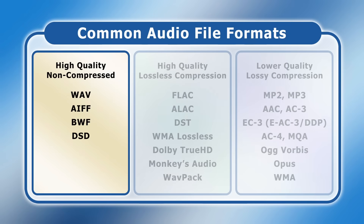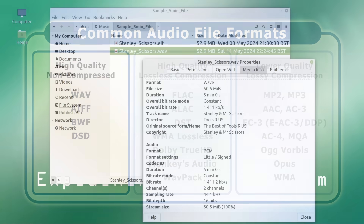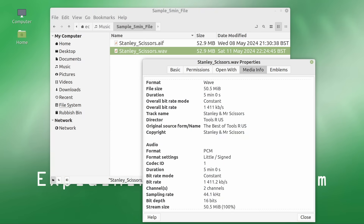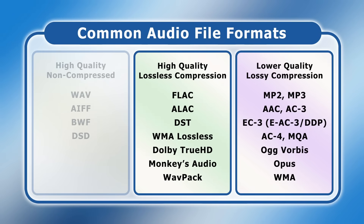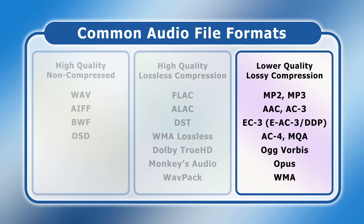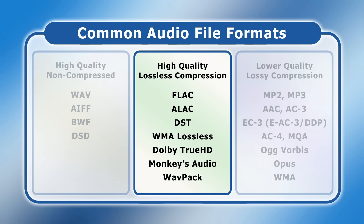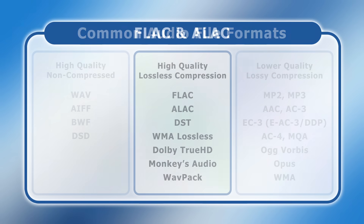Whilst non-compressed formats provide excellent quality, this comes at the expense of a large file size. For example, a 5-minute 44.1 kHz 16-bit WAV or AIFF file is 52.9 MB. Because of this, outside of production, most audio files are delivered and archived using compressed file formats. Some of these are lossy, but others are lossless and so decrease the file size without reducing sound quality.